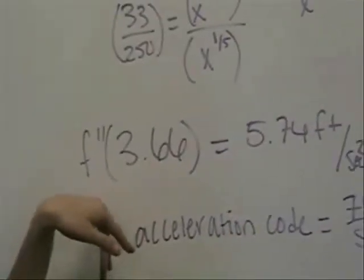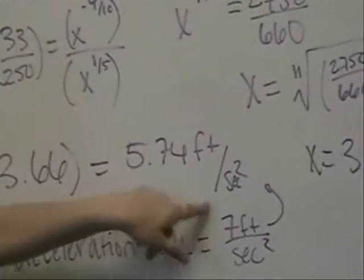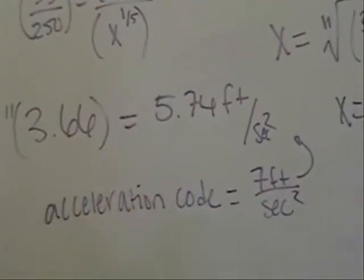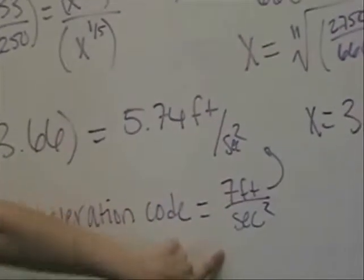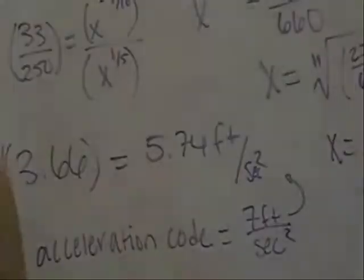And then we're going to plug it into the acceleration or the second derivative and we get 5.74 feet per second squared. And we had to compare that to acceleration code which says the maximum acceleration is 7 feet per second squared. And since that's less than that, he's actually fine that way.